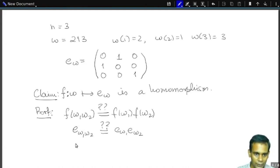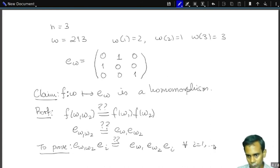So what we can do is, we can check if E_ω_1, ω_2 multiplied by E_I, this column vector with 1 in the I through, whether this is equal to E_ω_1 multiplied by E_ω_2 multiplied by E_I. So this is what we need to prove, for all I 1 to N.